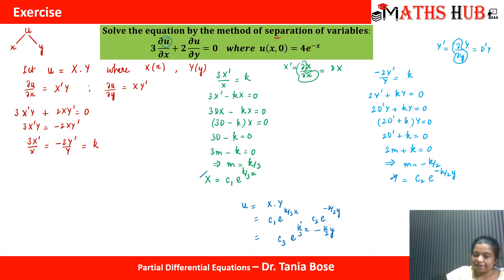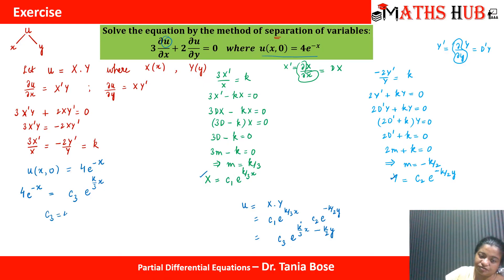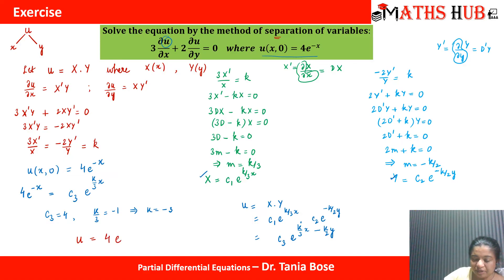We are also given the initial condition u(x, 0) = 4e^(-x). Setting y = 0 in our general solution: 4e^(-x) = c3·e^(k/3·x). Comparing both sides, c3 = 4 and k/3 = -1, so k = -3. The final solution is therefore u = 4·e^(-x + 3y/2).